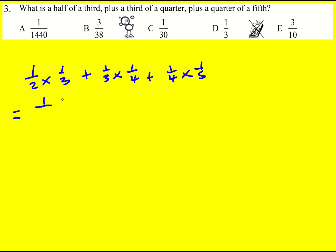I'm now going to multiply these fractions together to give 1 over 6 plus 1 over 12 plus 1 over 20.